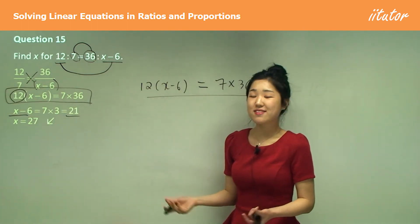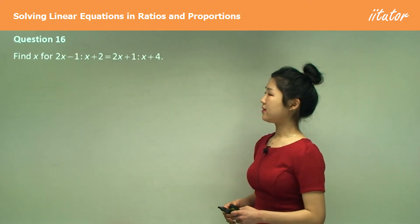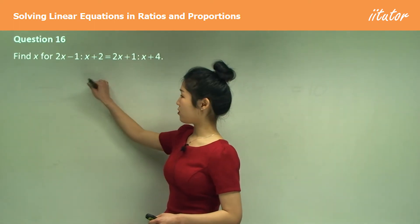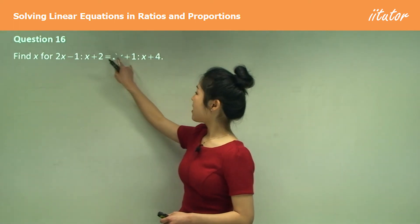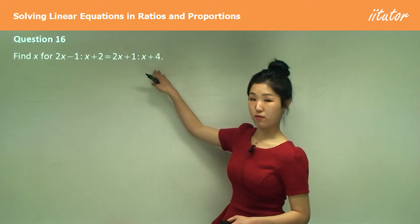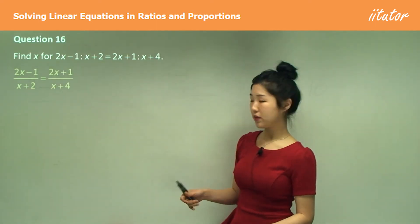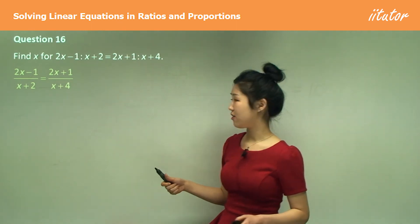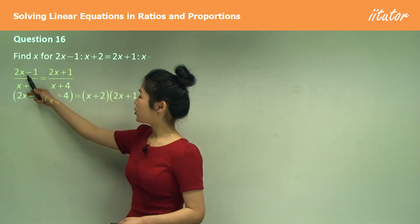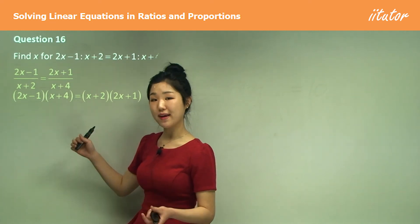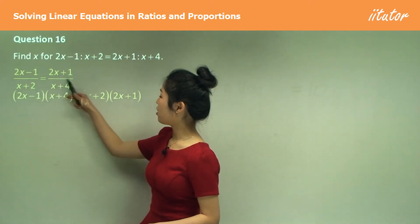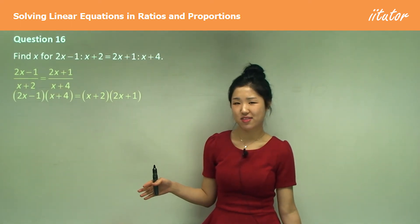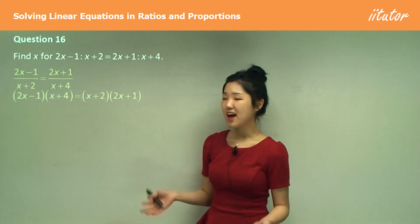Question 16: find x for (2x − 1) : (x + 2) = (2x + 1) : (x + 4). Convert it to fraction form and cross multiply. Multiply (2x − 1) with (x + 4) — use brackets — and also multiply (x + 2) with (2x + 1) — use brackets.